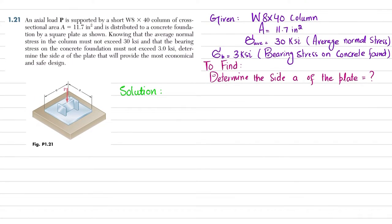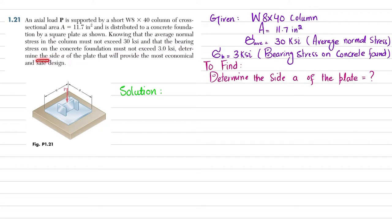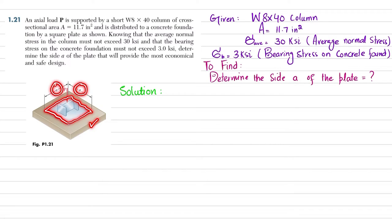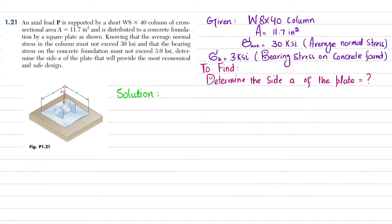Now for problem 1.21: an axial load P is supported by a short wide-flange W8×40 column whose cross-sectional area is 11.7 square inches, and is distributed to a concrete foundation by a square plate. The average normal stress in the column must not exceed 30 ksi, and the bearing stress on the concrete foundation must not exceed 3 ksi. Determine the side a of the plate for the most economical and safe design.